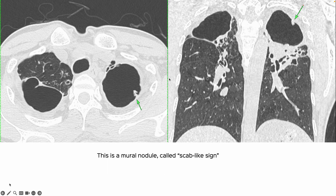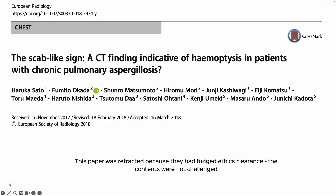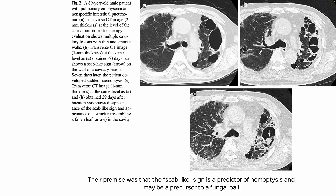This patient didn't have fungal balls, but if you notice, the patient has this mural nodule arising from the cavity. This is called the scab-like sign. It was first described — and it's the only paper that has described it — in 2018. The paper was later retracted because they had fudged ethics clearance, but the contents were not challenged.